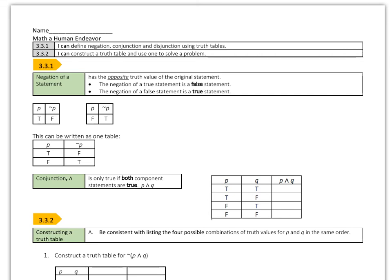We're going to talk about the negation of a statement. We have to think about true or false — that's what we're going to be talking a lot about. The negation of a statement has the opposite truth value of the original statement. So the negation of true is false, and the negation of false is true. If my P statement is true, then not P has to be false, or vice versa — if P is false, then not P is true. It just has the opposite.